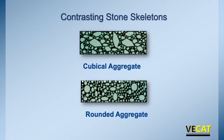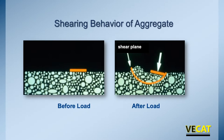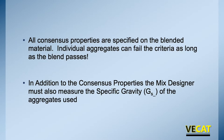We talked about fine aggregate angularity and coarse aggregate angularity — both limiting rounded products from our mixes. Here's a good illustration: the bottom picture's cross-cut view shows a lot of rounded particles; the top picture's cross-section shows a more angular product with limited rounded particles. Under traffic, if you put a lot of rounded particles in your mixes, the pavement will move and tend to rut. All consensus properties are specified on the blended material — an individual aggregate can fail one criteria as long as the blend passes.